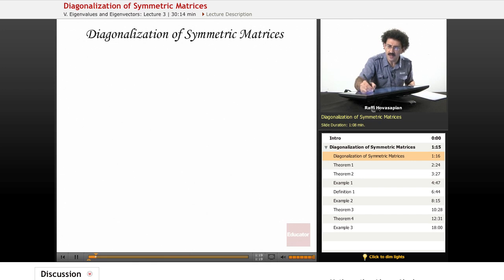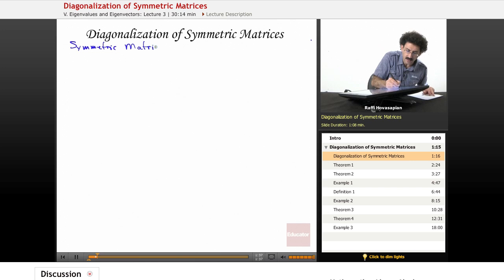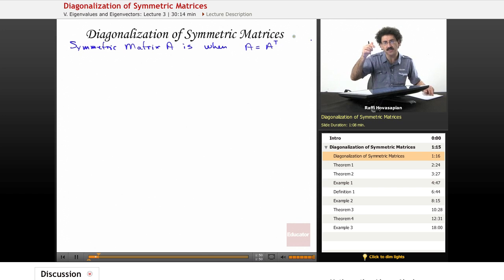Let's try a blue ink today. So recall that a matrix is symmetric if A equals A transpose. A symmetric matrix A is when A is equal to A transpose. So essentially this means that everything that's on the off diagonals is reflected along the main diagonal as if that's a mirror.